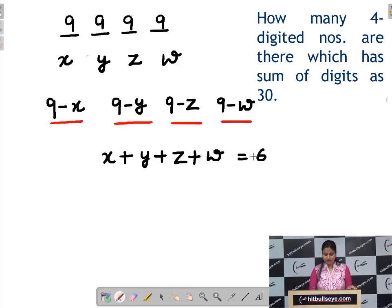Now, formula time, what is the answer for this? It will be 6 plus 4, where 4 stands for number of variables, minus 1, choose 4 minus 1. If we calculate this, we will get 84 as the answer.